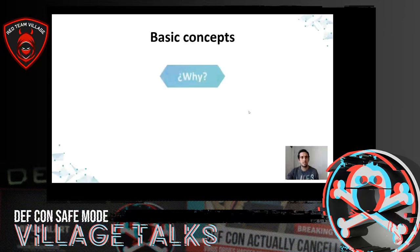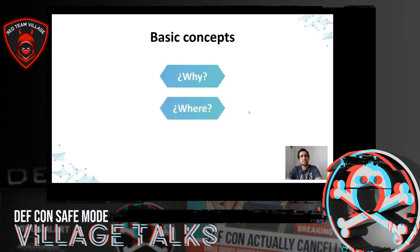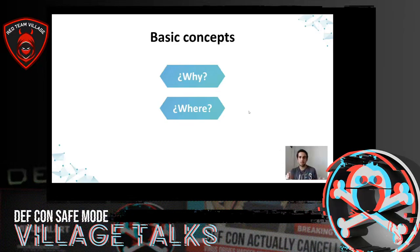Where should we deploy persistence? The simplest answer is: as everywhere as you can. Many teams focus on deploying persistence only on internal systems or internal servers, but in my opinion that is a mistake, since it limits access vectors and at the same time makes it easier for the blue team to detect persistence. We will have to deploy persistence in different locations — the DMZ, internal servers, internal workstations, internal domains, and so on.